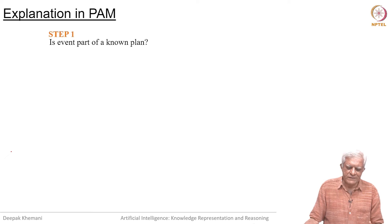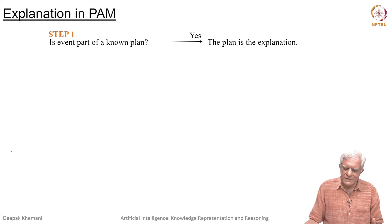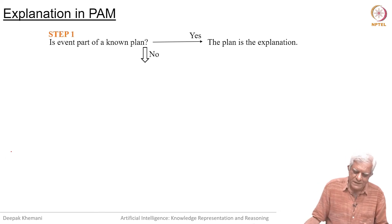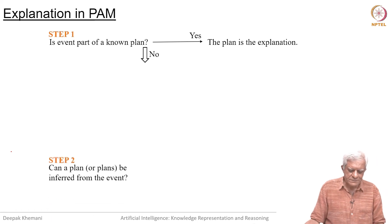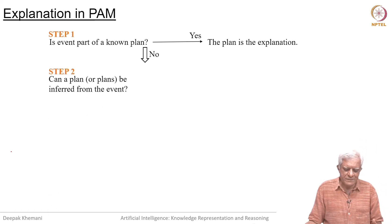If you are looking at an event, the first thing you ask is, is the event part of a known plan? Then the plan is the explanation. If it is not part of a known plan, then can a plan be inferred from that event? If no, then you cannot do anything further, you return failure.